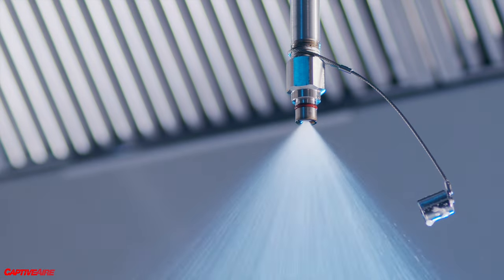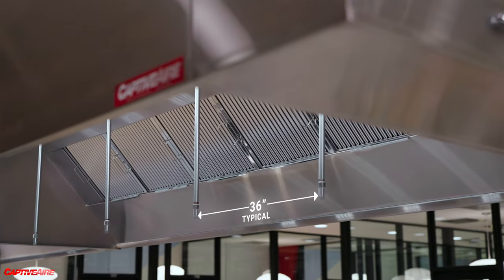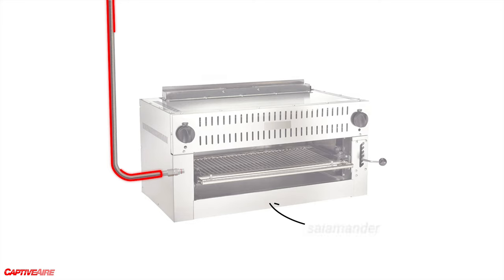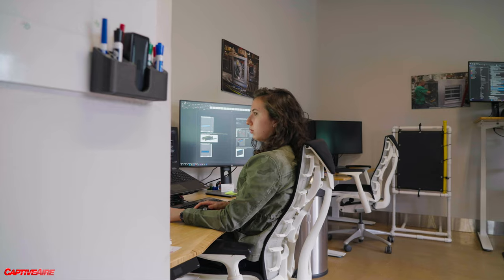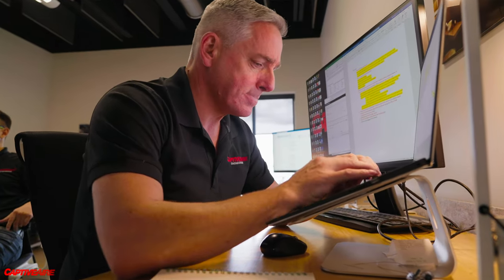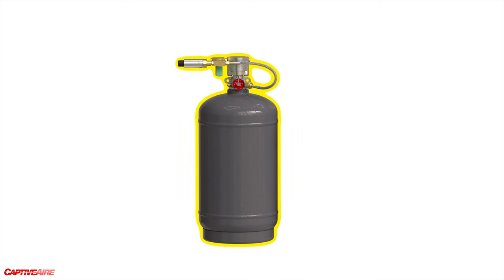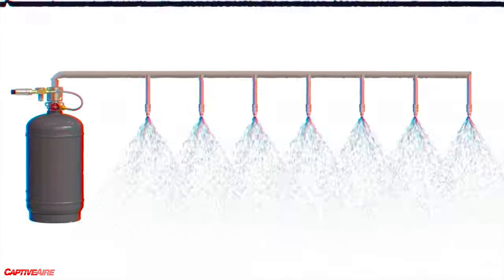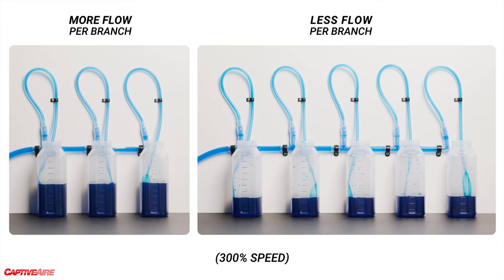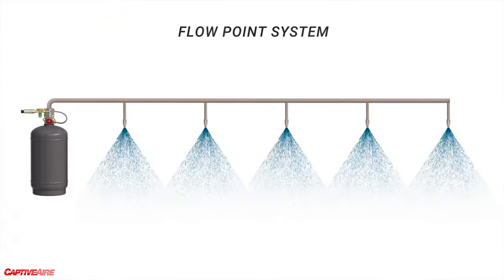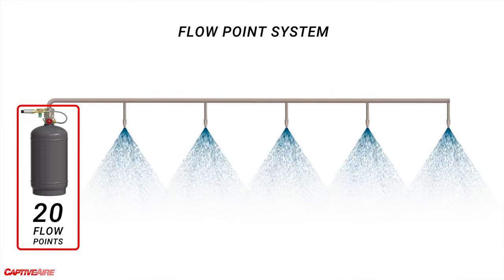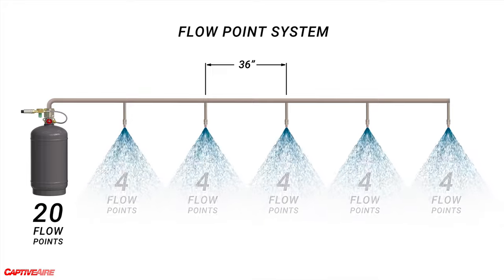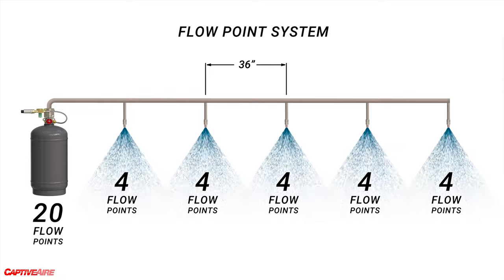One very important consideration is how many nozzles to install and how far apart to place them. The typical spacing is 36 inches apart, but this can change with heavy-duty applications or appliance-specific drops. With Tank, the agent in any single tank is split between however many nozzles are connected to it — more nozzles means each nozzle gets less flow. So Captivaire uses a flow point system: our system assigns 20 flow points to each individual tank. At 36-inch spacing, standard overlapping protection allows five nozzles per tank, each nozzle receiving four flow points. As long as we don't go over 20 points, we're good.